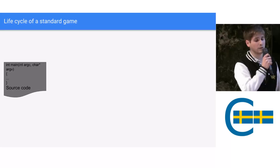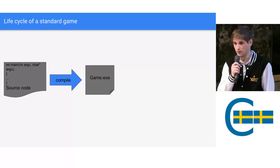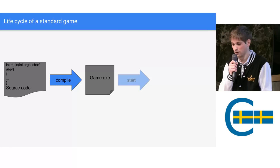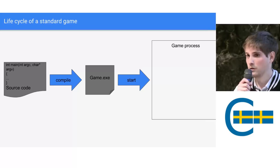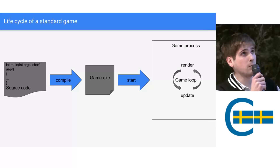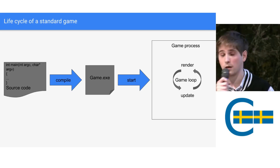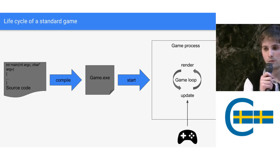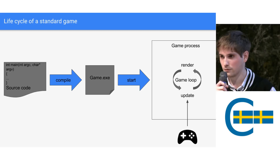A standard game usually starts by writing the source code of it, which you compile and this gives you an executable. That executable you can start, which will spawn a process. Within this process, you usually have a kind of game loop that will run the logic of the game. This game loop is rendering, updating, rendering, updating, again and again. And to be able to react from the player, you need to give the player inputs into the update function.